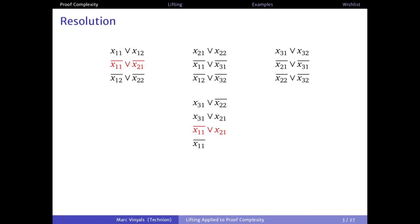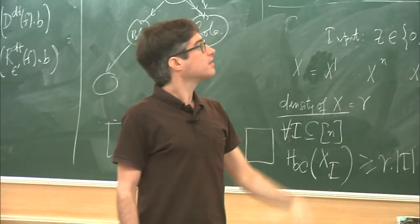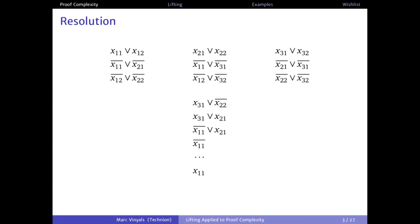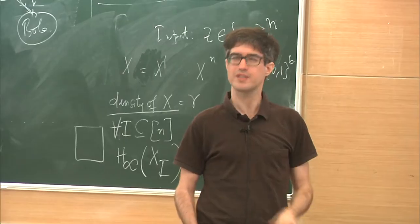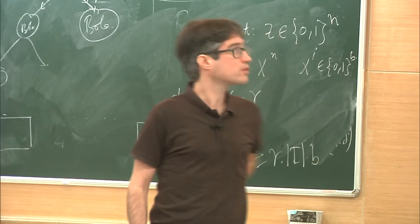We can keep doing that — using the new clause with previous clauses to derive something new, getting more and more information. For instance, we can derive that X11 must be false. And then through different steps we derive that this variable must actually be true, and that's a contradiction. So this is a bit shorter than enumerating all two-to-the-six assignments, but it's still not great.